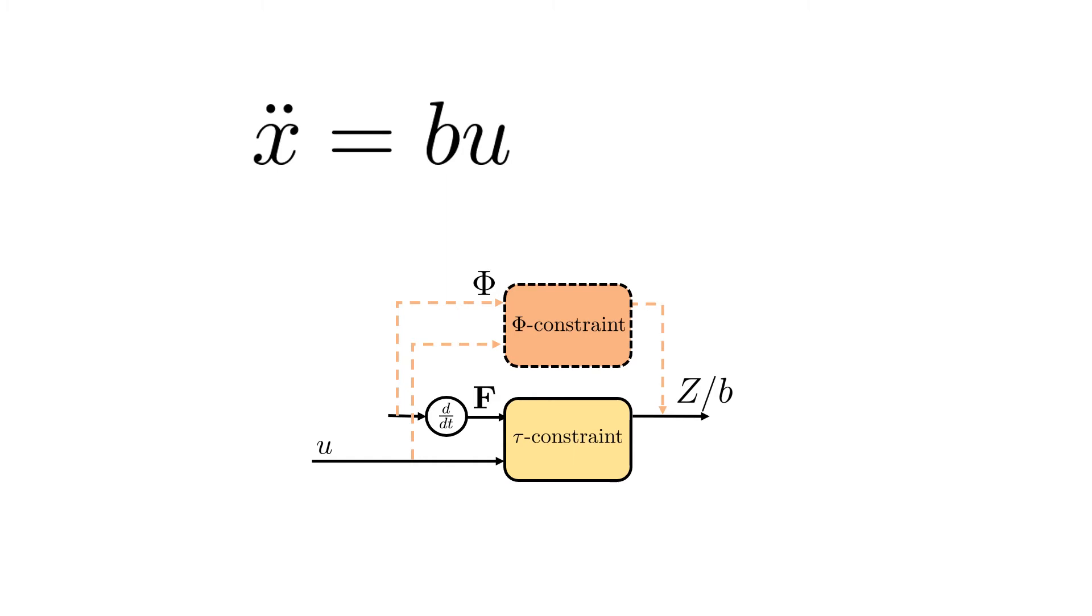This is sometimes called using an efference copy. Doing so makes the stability margins invariant with regard to the unknown gain.